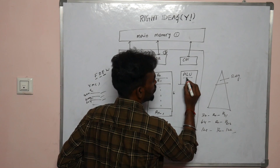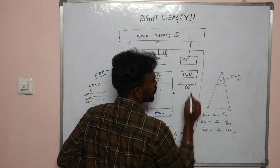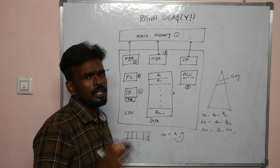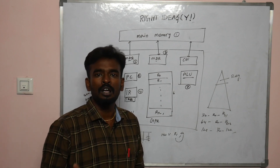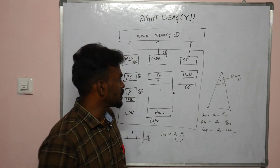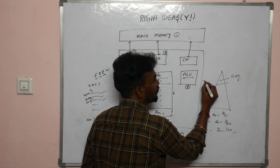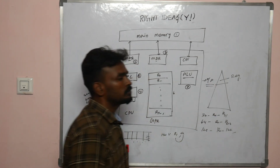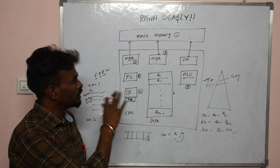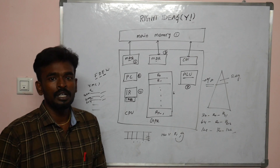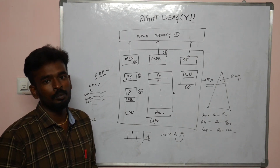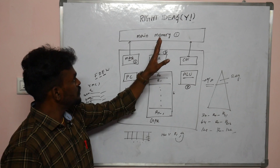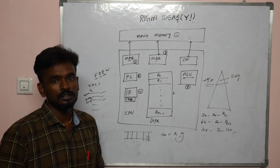ALU — Arithmetic and Logical Unit — will execute operations. If it is an arithmetic operation, the arithmetic unit executes it; otherwise, the logical operation executes. We get the final output. So in summary, this diagram covers the basic operation concepts in computer architecture — the communication between main memory and processor.